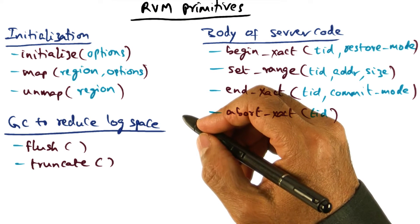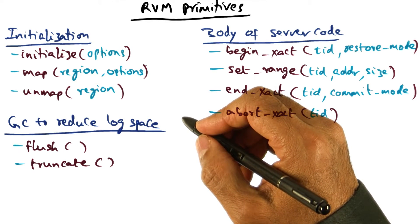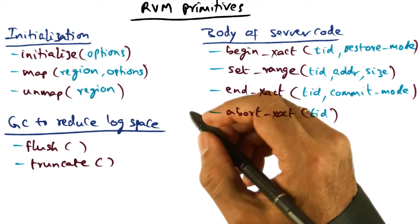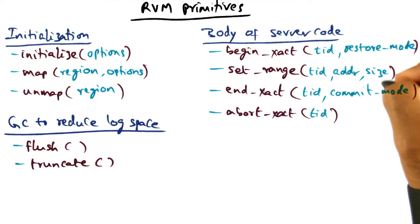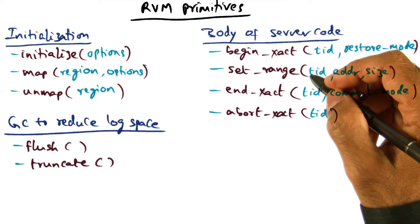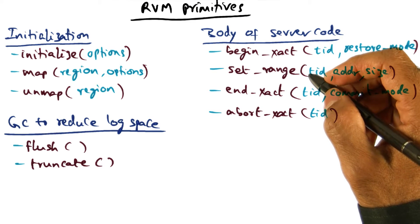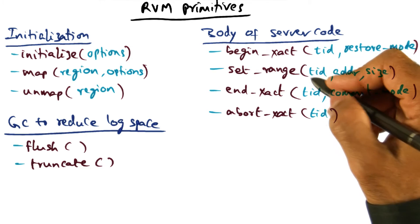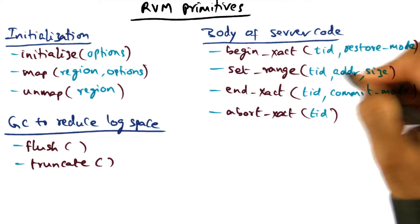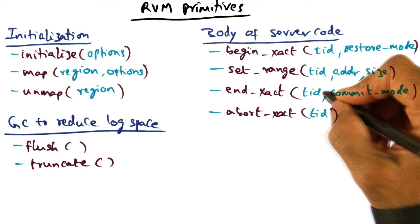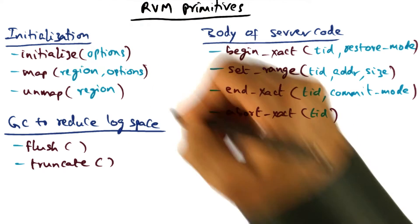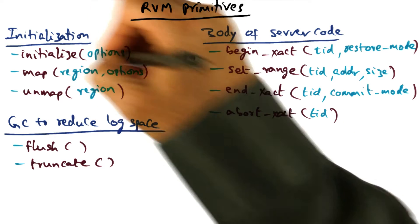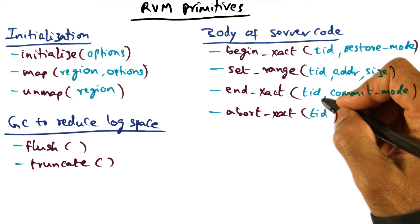As we said earlier, RVM has to be efficient, otherwise no one will use it. The runtime does not actually write the persistent data specified through the set range call directly to the external data segments. Instead, it writes the changes to the block of addresses specified by the set range call as a redo log in a log segment named in the initialized call. The log segment is the trick to avoid random writes to the disk.